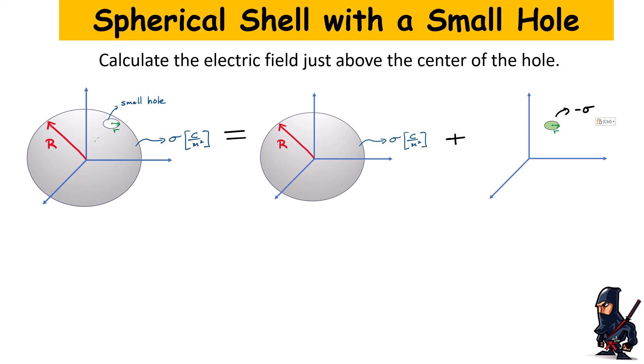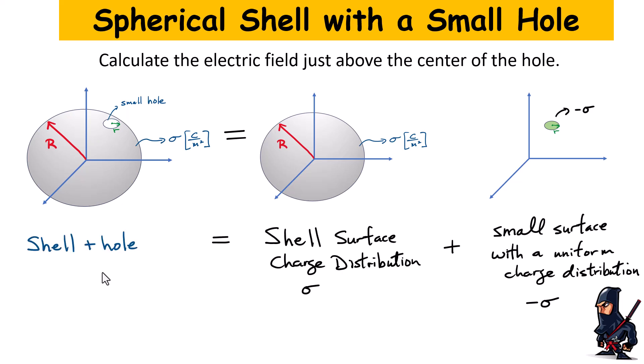And for the charge distributions to be equal to what my starting object was, that little area here, or that little hole area, has to have a charge distribution negative sigma. That way when I add both of those charge distributions, I am going to get the object that I started with. So this is what it looks like.